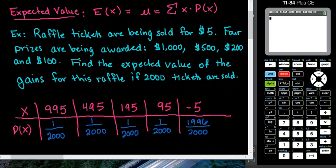And so if we won the $1,000 prize, we're really only winning $995, or that's what our gain is going to be because we paid $5 to play in this raffle.